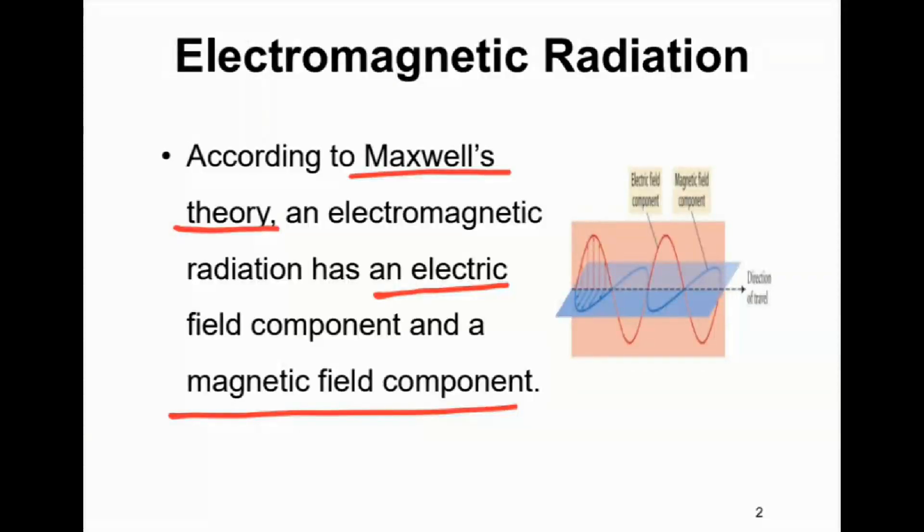There are two types of fields that exist in electromagnetic radiation and these are electric field and magnetic field in Maxwell's theory of electromagnetic radiation.